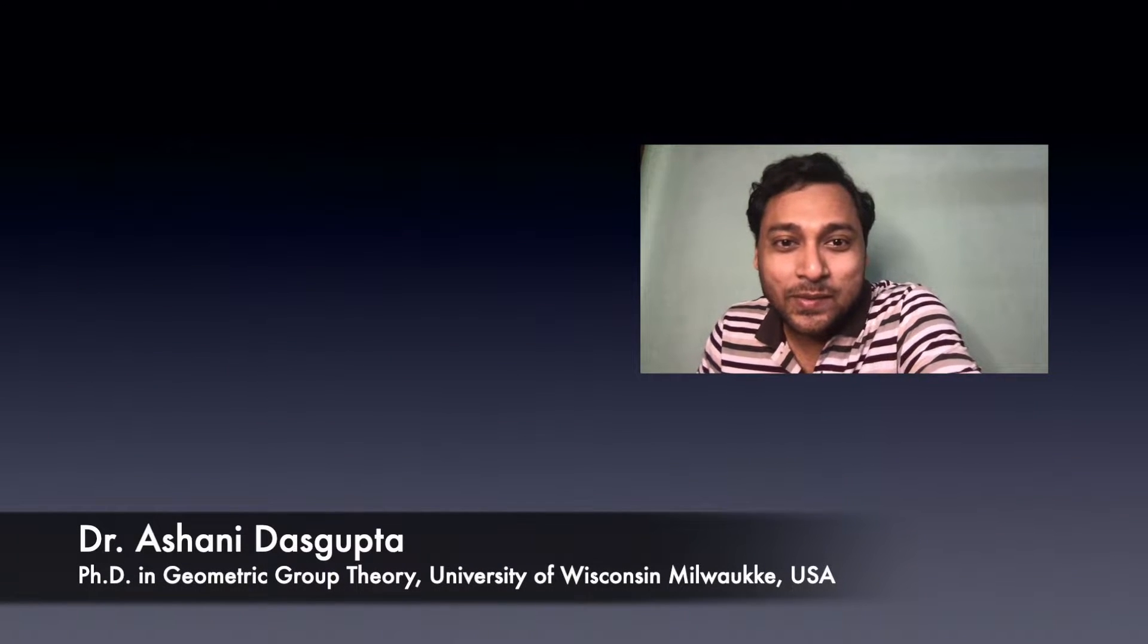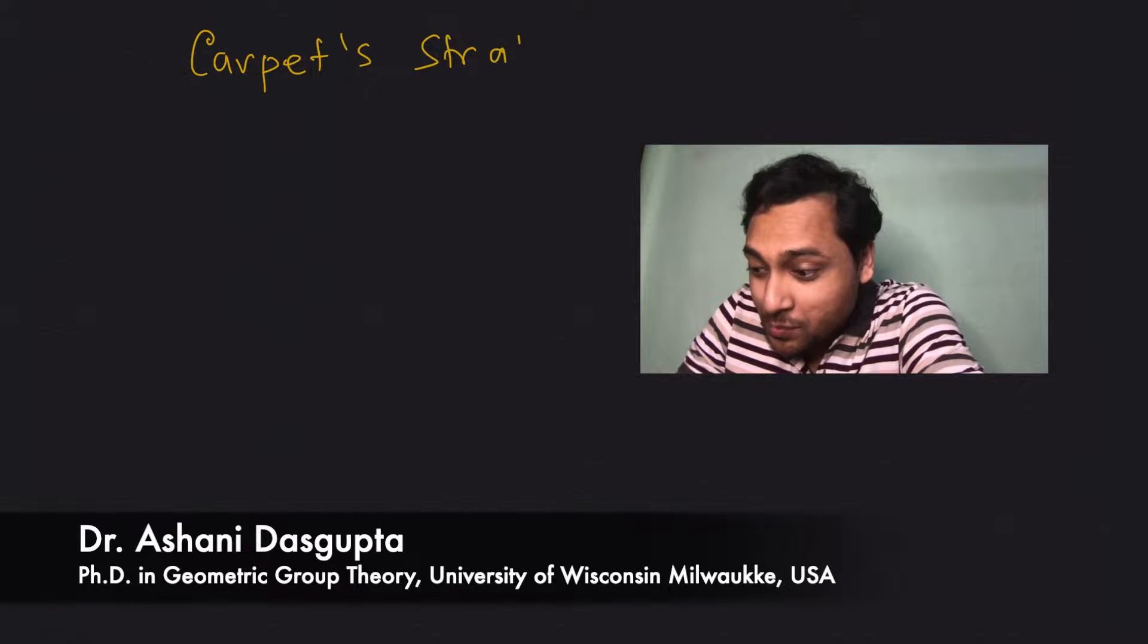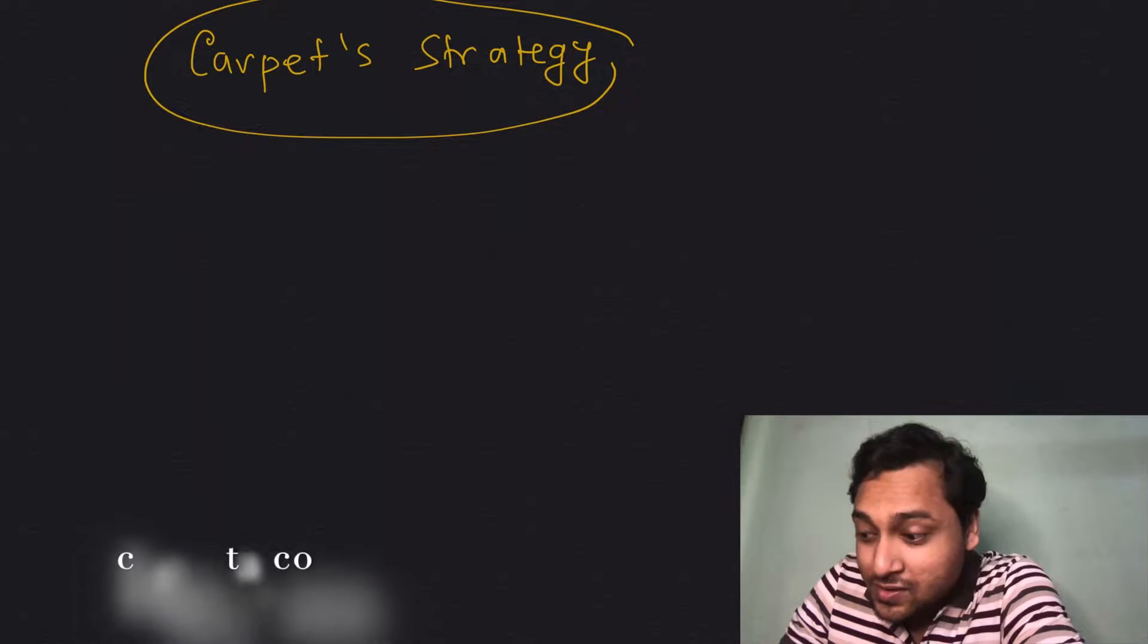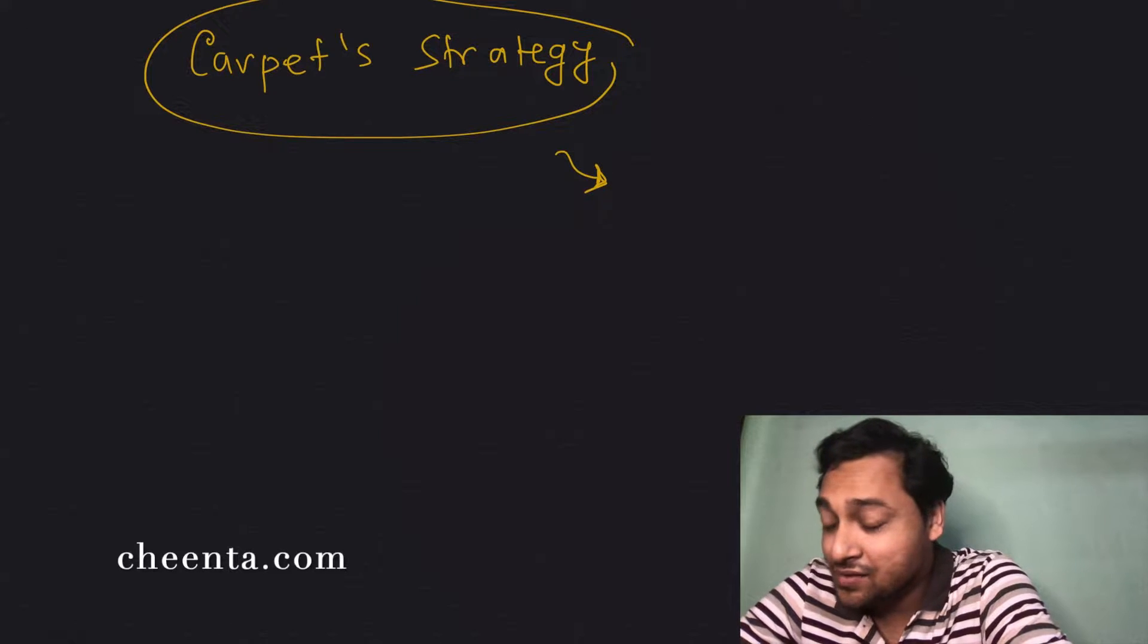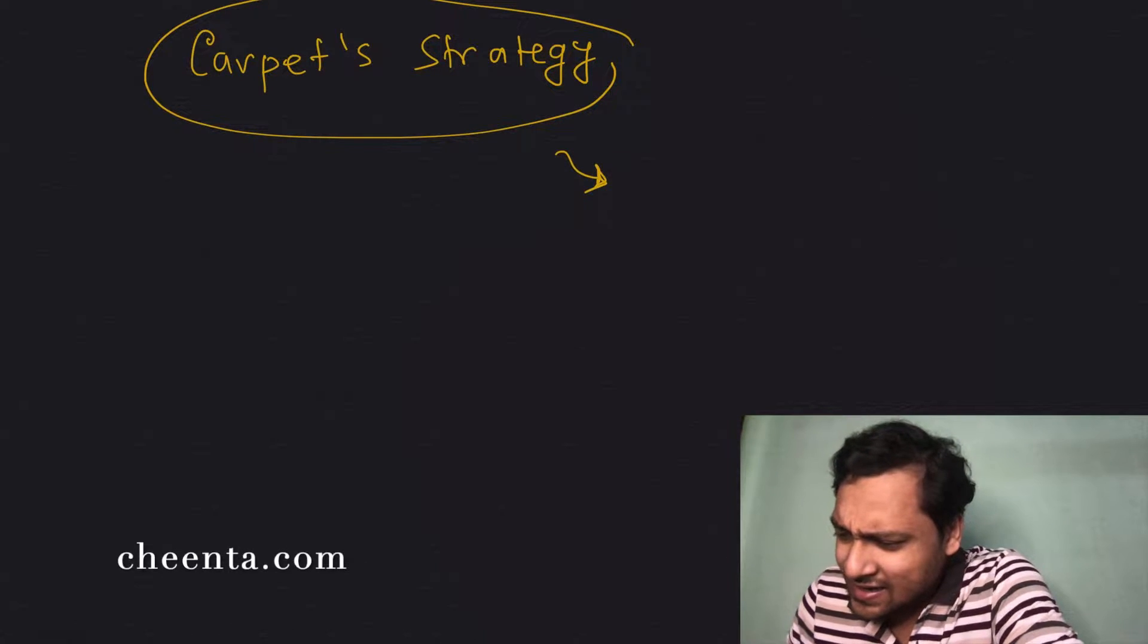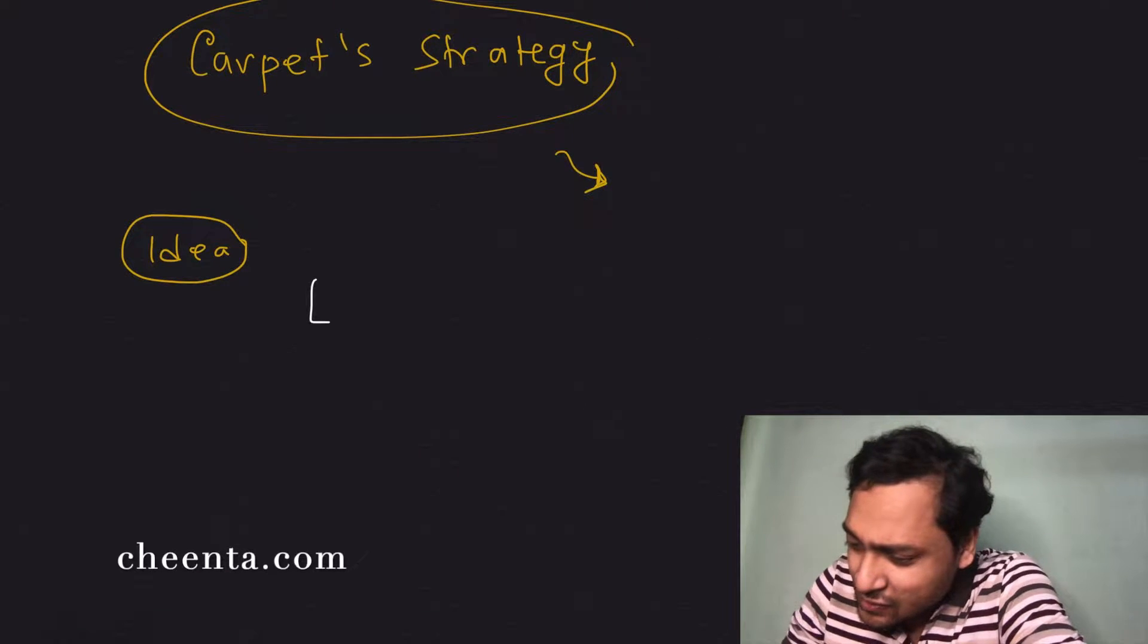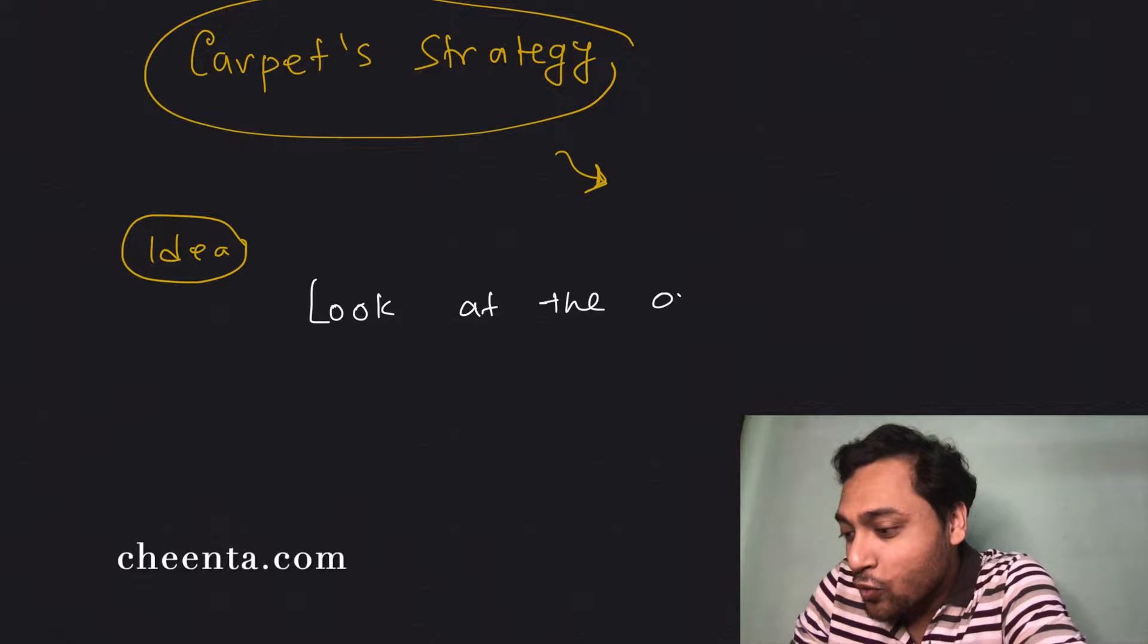Alright, so today we will be learning something called the carpet strategy. It is from geometry for maths olympiad, but it is also used in other parts of contest mathematics like ISI entrance, CMI entrance. The idea is this: look at the overlap.